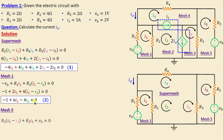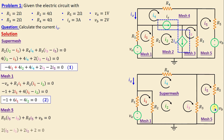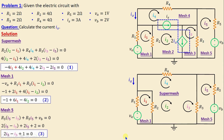Applying Kirchhoff's Voltage Law in mesh five, we write: R3(i5 − i3) + R5·i5 + Vb = 0. Replacing the resistors and voltage with their numerical values, we obtain: 2(i5 − i3) + 1 = 0, which simplifies to 2i5 − 2i3 + 1 = 0. We currently have three equations with five unknowns, so we require two additional equations.